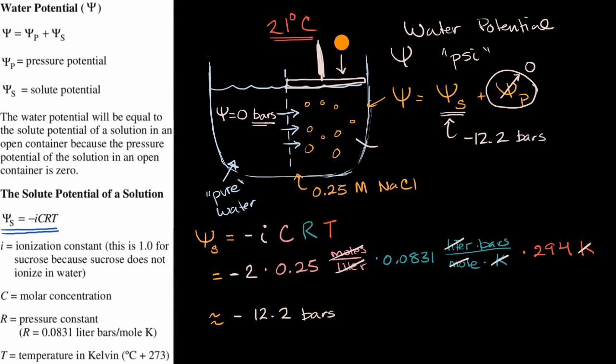Well, imagine if this was 12.2 bars that we were to apply up here. Then all of a sudden, this pressure potential wouldn't be zero. It would be positive 12.2. And then on the right, we would have negative 12.2 bars of solute potential plus positive 12.2 bars of pressure potential. And so that would add up to be a zero water potential, in which case, since the left and the right-hand side would have the same water potential, you would not have a net flow of water in either direction.